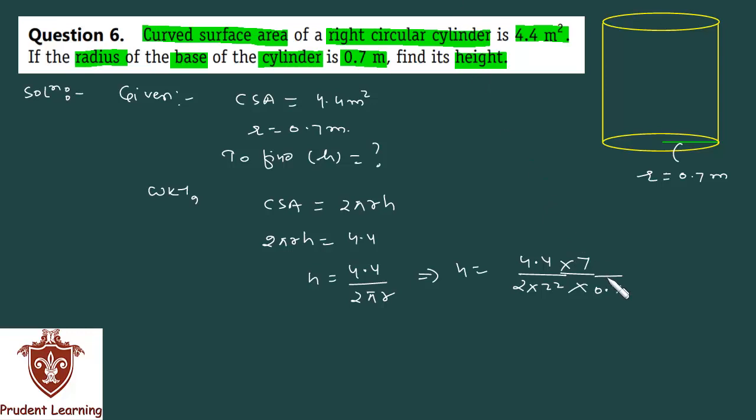Very easy calculation. 0.7 ones are and 0.7 tens are hoga 7. 4.4 ko tens se multiply karengay, toh yeh 44 hojaega. Or niche 2 into 22, yeh bhi 44 hai. To cancel hoga kya hoga 1. To aapko yeh pata chal gaya. Iska joh height hai, woh kya hai 1.